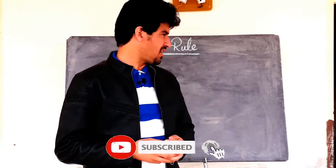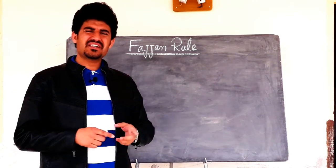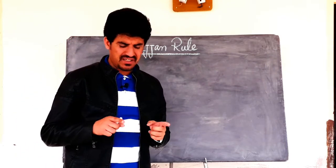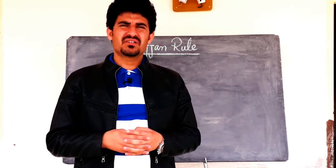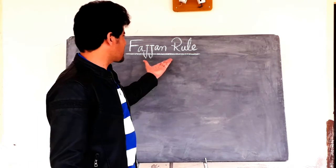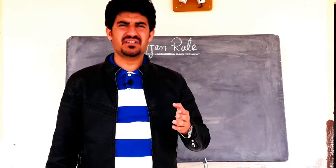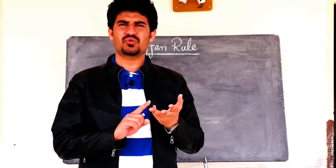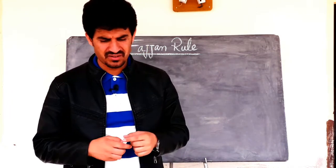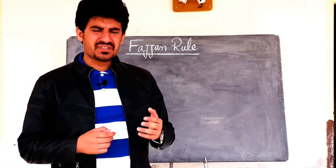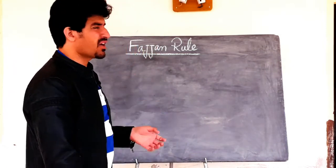Today we're going to talk about a very interesting lecture and that is Fajan's Rule. To understand organic chemistry, especially the S and P block chapter, this topic is very important to understand. Because you have to determine the stabilities and solubilities of oxides, chlorides, hydroxides, carbonates, bicarbonates, sulfates, and so on. So to discuss all these things, you have to first study about Fajan's Rule.